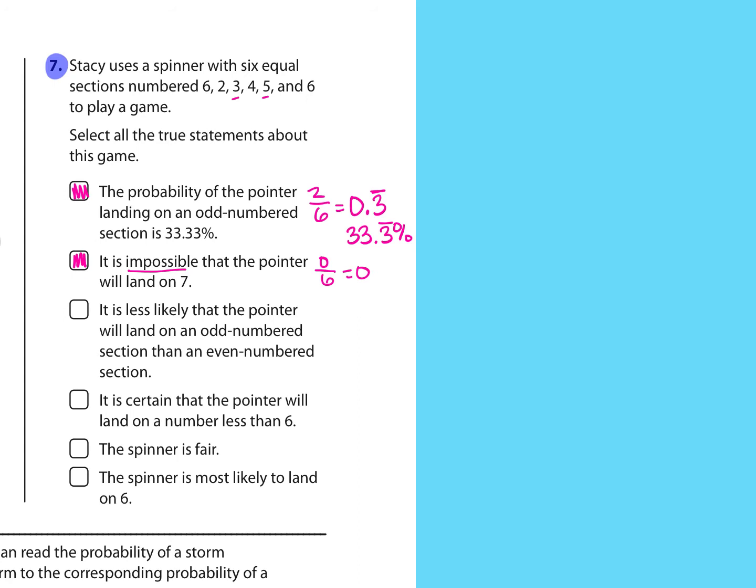The next says it's less likely to land on odd than an even numbered section. We already said the odd numbered section was 33.3 percent for odd, about 33 percent. The even numbered section would be 4 out of 6, which is 0.6 repeating, which is about 67 percent, so this is true.